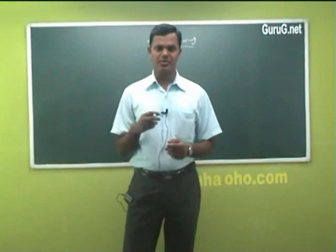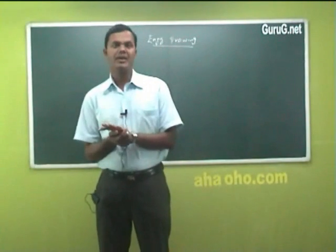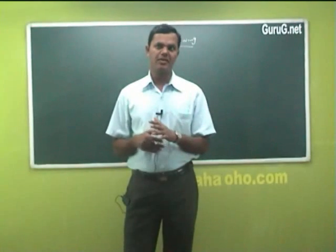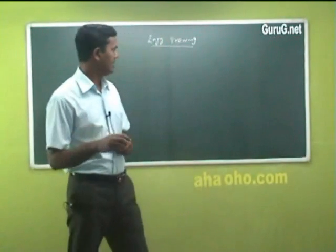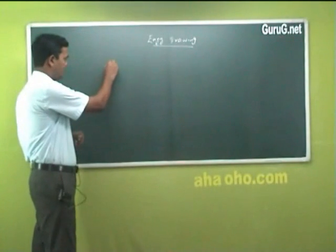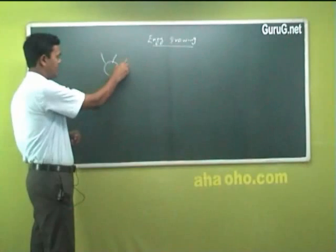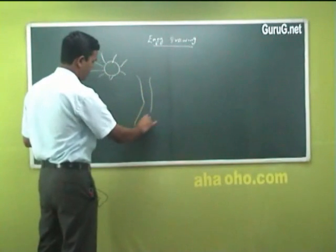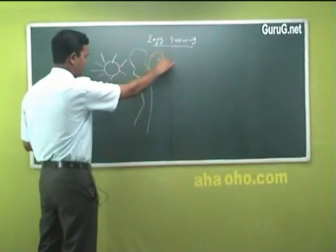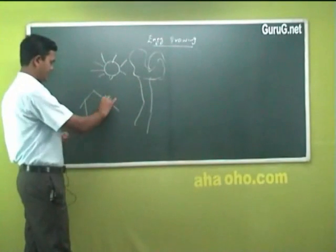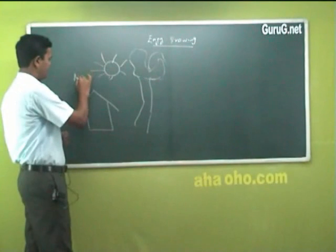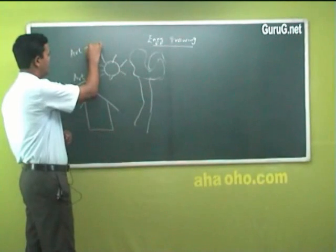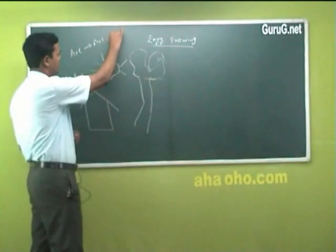I would like to differentiate between what is a drawing and what is art. In general, when we speak about art from our school days, art is something like drawing a picture of a sun, a sunrise or sunset, a tree, a house or a hut. This is called art, and the person who does this is called an artist.